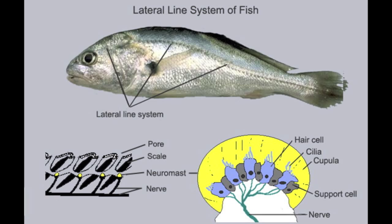The lateral line is a line of nerves, or neuromasts, that extend out of the side of the body of the fish. They are very similar to the cilia found on the inside of the cochlea of terrestrial animals. The little nerves move with particle motion — as things move around the fish, these little cilia also move. So it's a particle motion sensing tool.